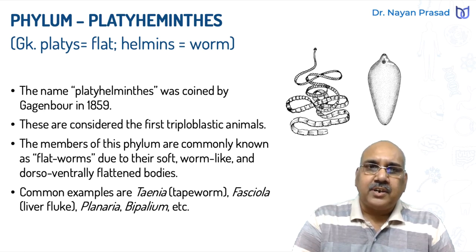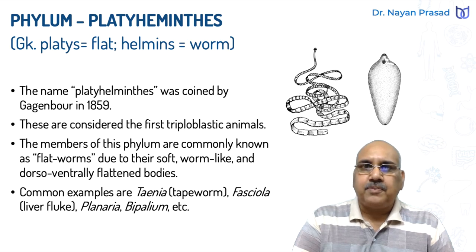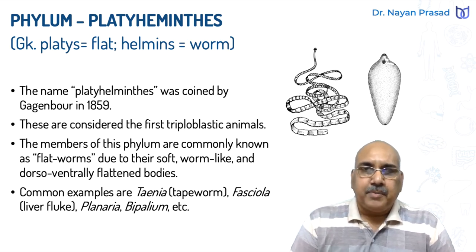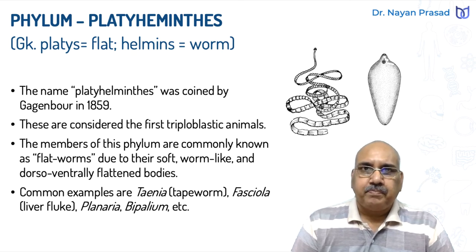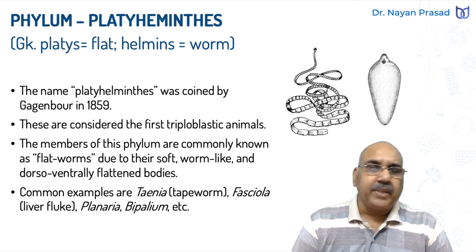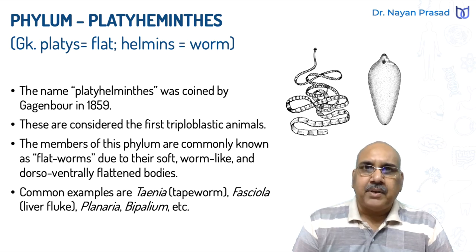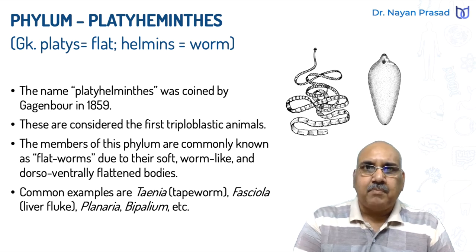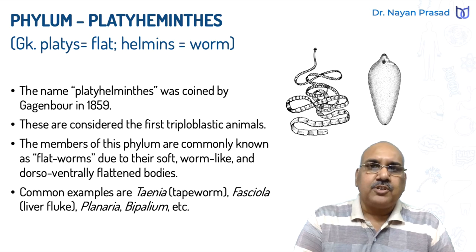These are considered as the first triploblastic animals. Diploblastic animals are in the first two groups — in the previous groups we have seen Phylum Porifera and Phylum Cnidaria; they are diploblastic. All other members in the animal kingdom are triploblastic, and among triploblastic multicellular animals, Platyhelminthes is the first group.